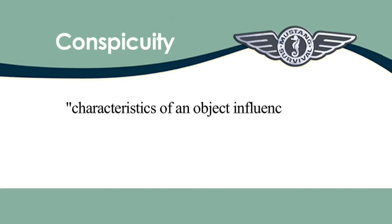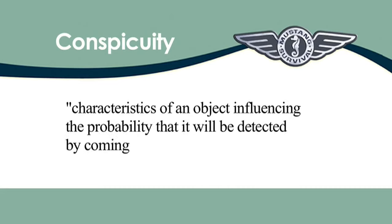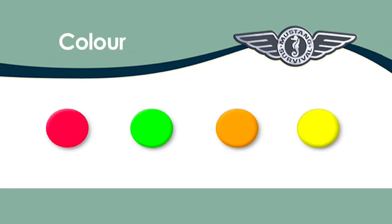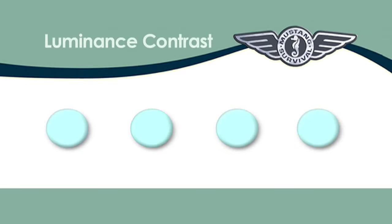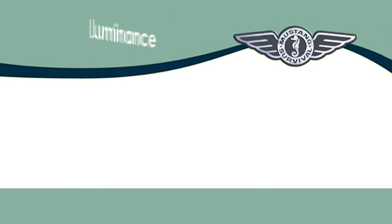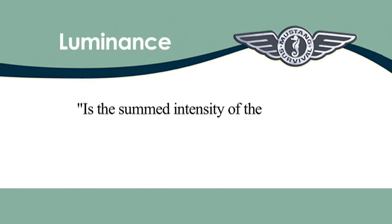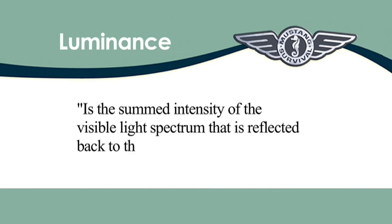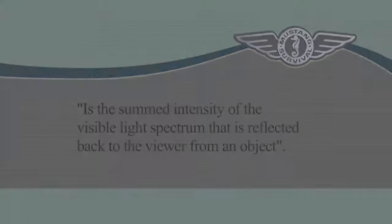Conspicuity is a characteristic of an object influencing the probability that it will be detected by coming to the attention of the observer. Colour and luminance contrast affect conspicuity. Luminance contrast is considered the most important of these two mechanisms and is often the trigger for recognition. Luminance is the summed intensity of the visible light spectrum that is reflected back to the viewer from an object. It can be likened to brightness or vividness.